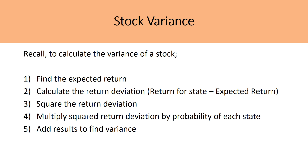Before moving on to portfolio variance, it's important to recall how to calculate the variance of a single stock — this is where a lot of students stumble, so it's important to practice. There are five steps: first, find the expected return. Then calculate the return deviation by subtracting the expected return from the return for each state. Third, square the return deviation. Fourth, multiply the squared return deviation by the probability of each state. Finally, add up the results to find the variance. We'll do an example to solidify this procedure.